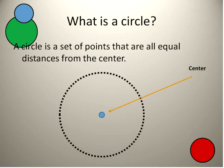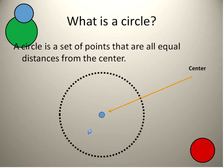First off, we need to say what is a circle, and this is an example of what a circle is right here. A circle is a set of points that are all an equal distance from the center. So the center, you draw that point, and then each other point is exactly the same distance from that center. You may have constructed a circle using a compass. That's a tool that basically holds the same distance, and then you rotate it around, and it'll draw a perfect circle.